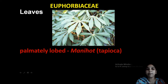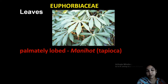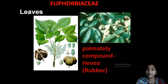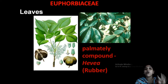Palmately lobed leaves occur in Manihot — that is tapioca, our common kappa. So there are different types of leaves: simple leaves, compound leaves, and leaves with hairs. Stipules modified into spines are present. Palmately compound leaves are observed in Hevea brasiliensis — that is rubber. The basic feature is presence of latex or a liquid that oozes out from the plant.